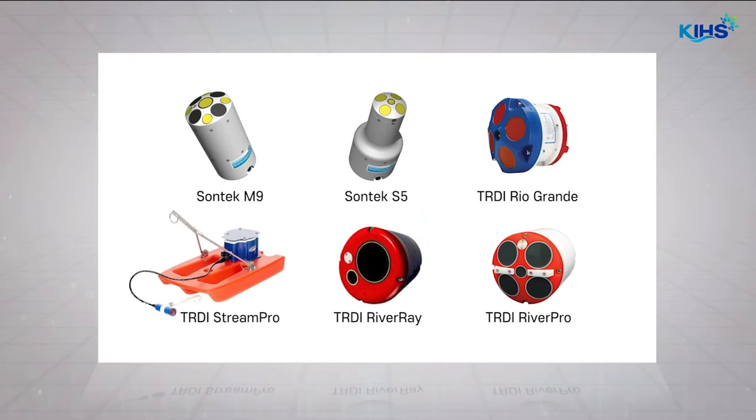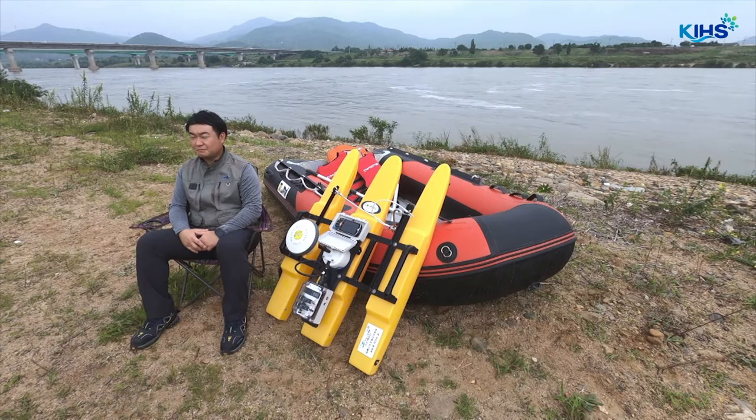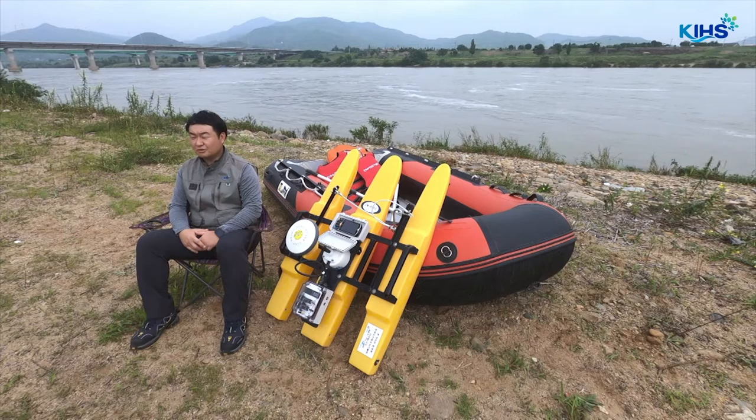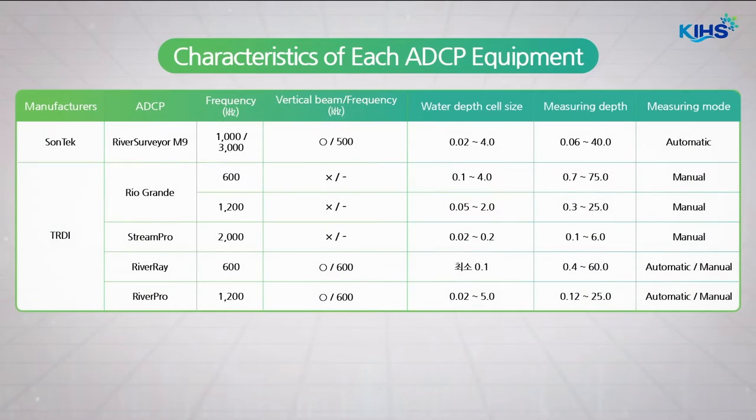ADCPs manufactured by TRDI and Sontek are widely used. Usually, three to four transducers are used to transmit sound waves in various directions and then measure two- or three-dimensional velocity profiles. There are various models according to the characteristics of the frequency produced by the ADCP.